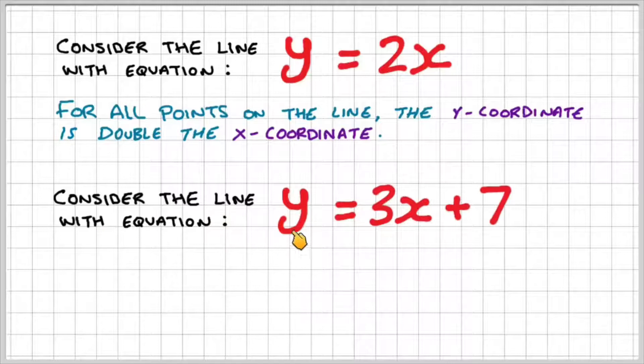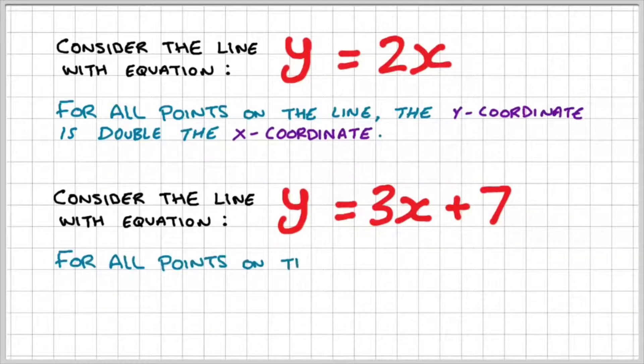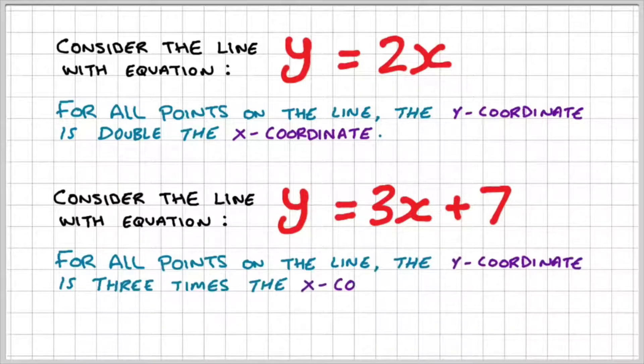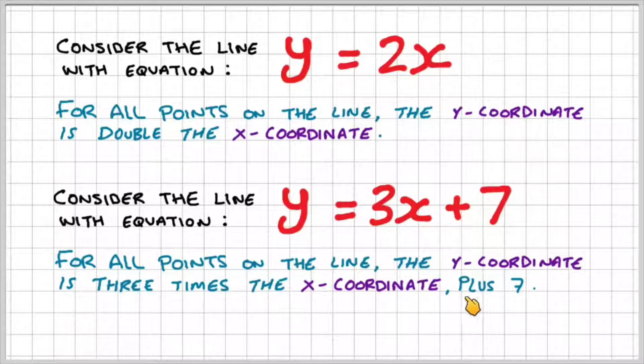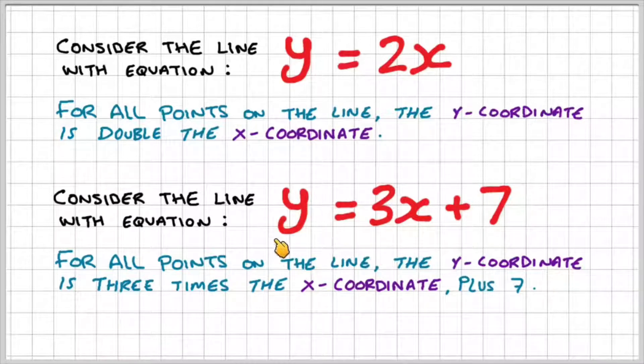Consider the line with equation y equals 3x plus 7. What does that mean? Well, for all the points on the line, the y-coordinate is 3 times the x-coordinate plus 7. So for example, if I had a y-value of 1, then 3 times 1 plus 7 would give us an x-value of 10.